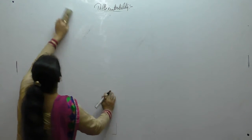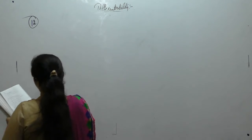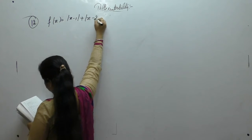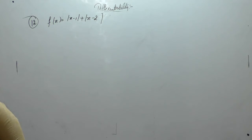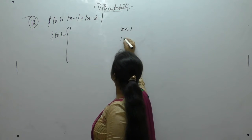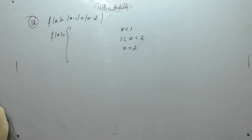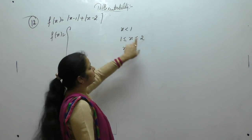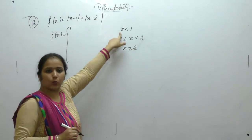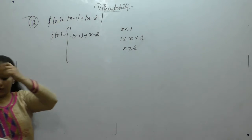Now the next one. Discuss the differentiability of the function f(x) = |x − 1| + |x − 2|. Now for f(x): when x is less than 1, when x is greater than or equal to 1 but less than 2, and when x is greater than or equal to 2. When x is less than 1, the modulus of both terms will be negative.